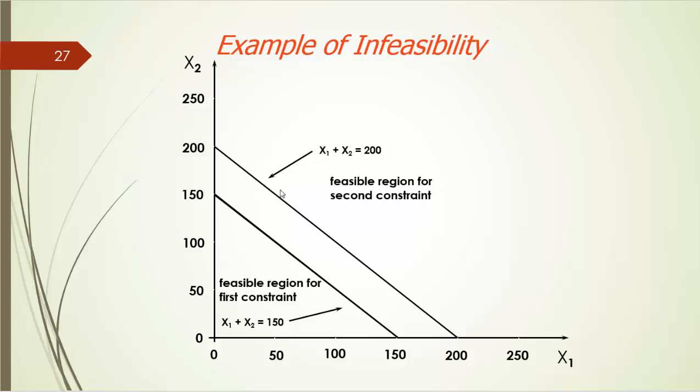In the example we see here in this graph, the sum of x1 and x2 must be 150 and 200 simultaneously. It is simply impossible. Infeasibility occurs when there are conflicts like that. It usually reminds us of double-checking our LP model, making sure that there is no error in our model itself.